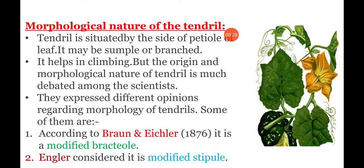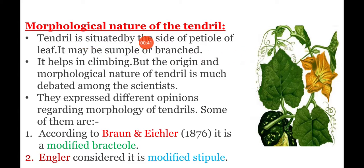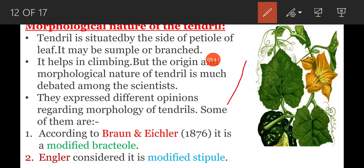What is a tendril and where is it situated? Tendril is situated by the side of the petiole of the leaf. It may be simple or branched. Simple means that it is very simple without any branch — such a tendril is called a simple tendril.